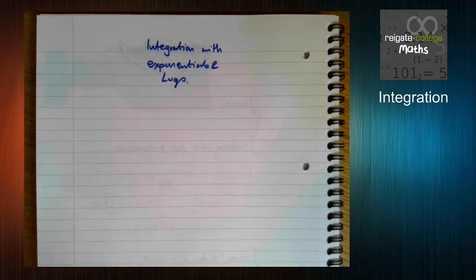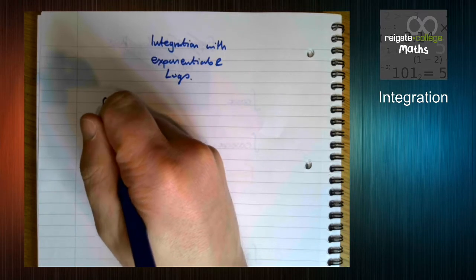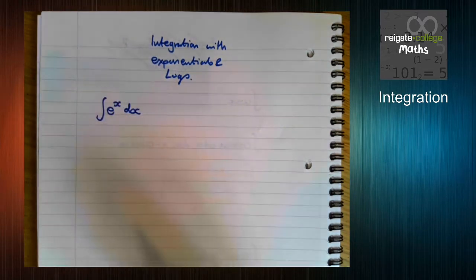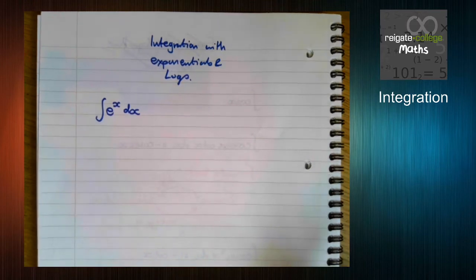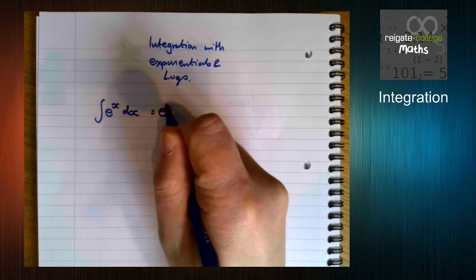Given what you already know about differentiating with exponentials, we know that if we differentiate e to the x, we get e to the x, which means going backwards is also true.